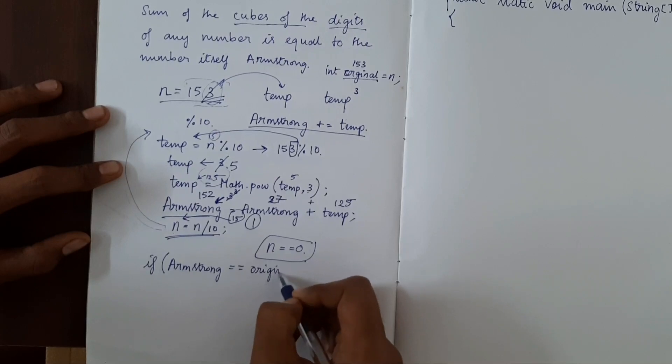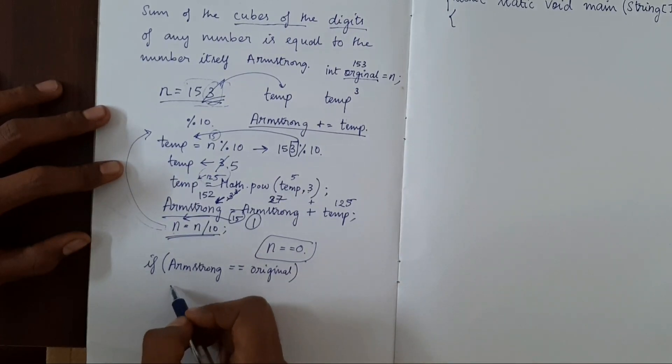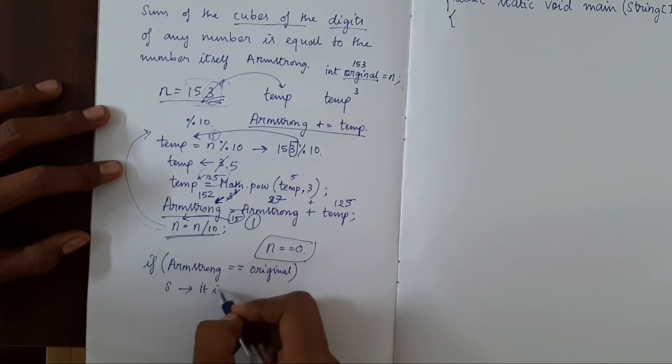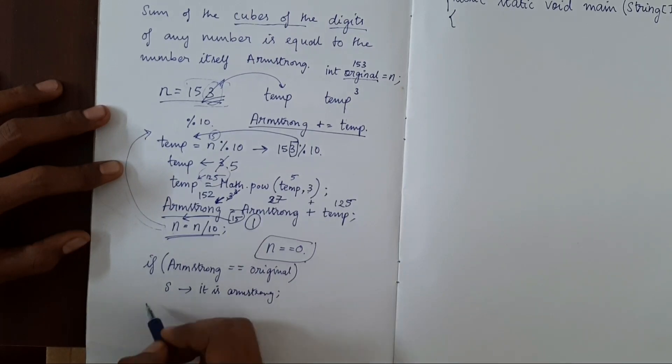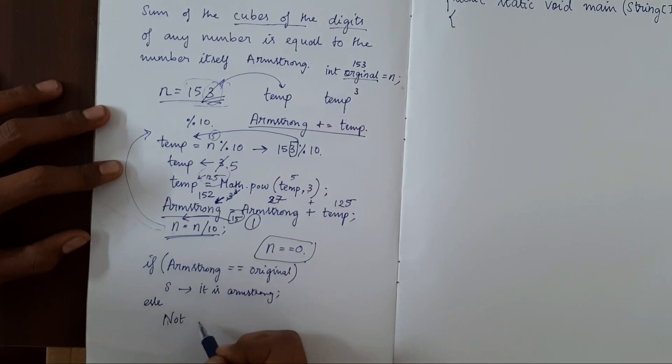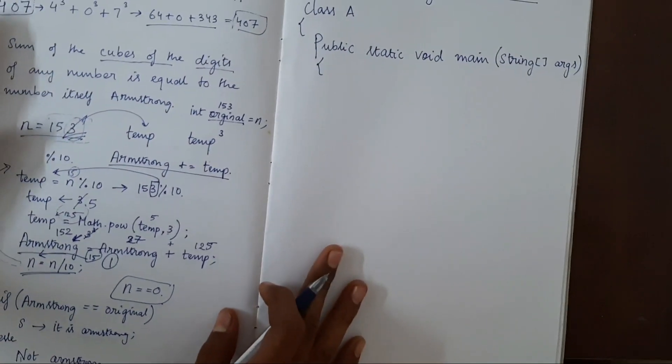So now if Armstrong number is equal to original, then we'll print it is Armstrong. Else, not Armstrong. Let's write the program for this.